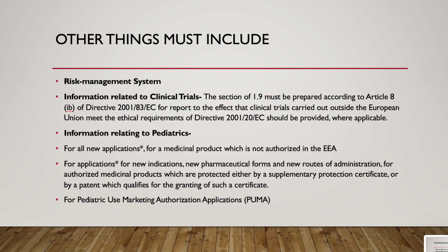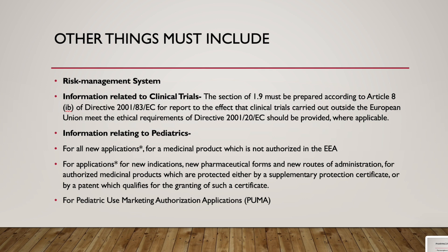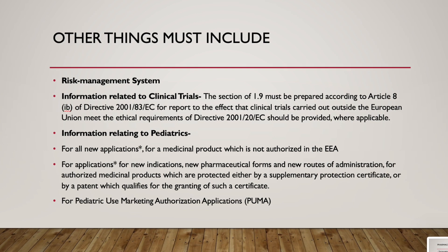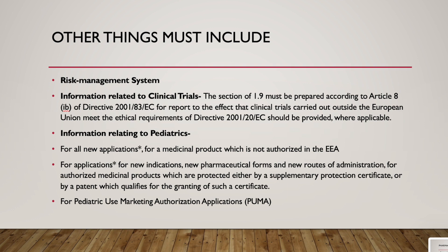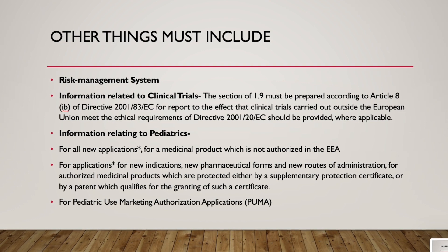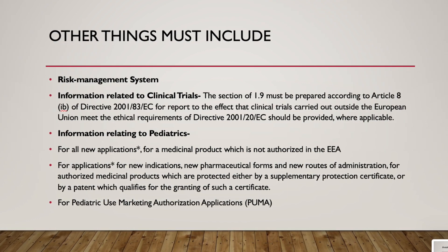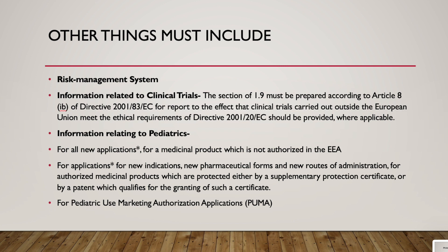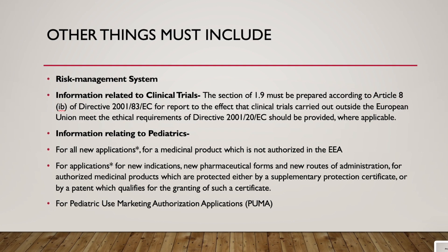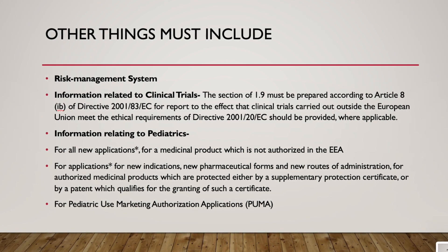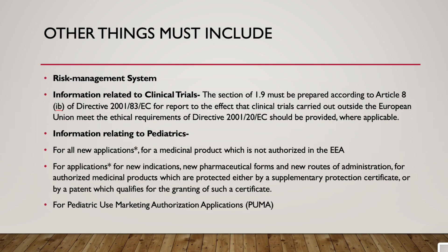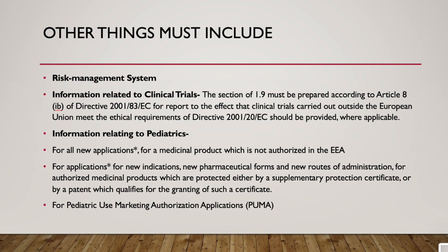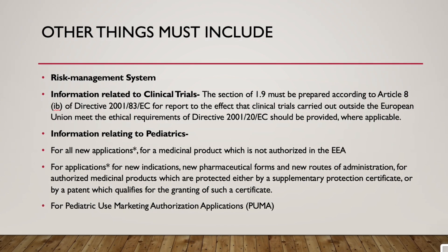Other items that must be included in Module 1 are: risk management system, and information related to clinical trials. Section 1.9 must be prepared according to Article 8(iBe) of Directive 2001/83/EC. A report confirming that clinical trials carried out outside the European Union meet the ethical requirements of Directive 2001/20/EC should be provided where applicable.